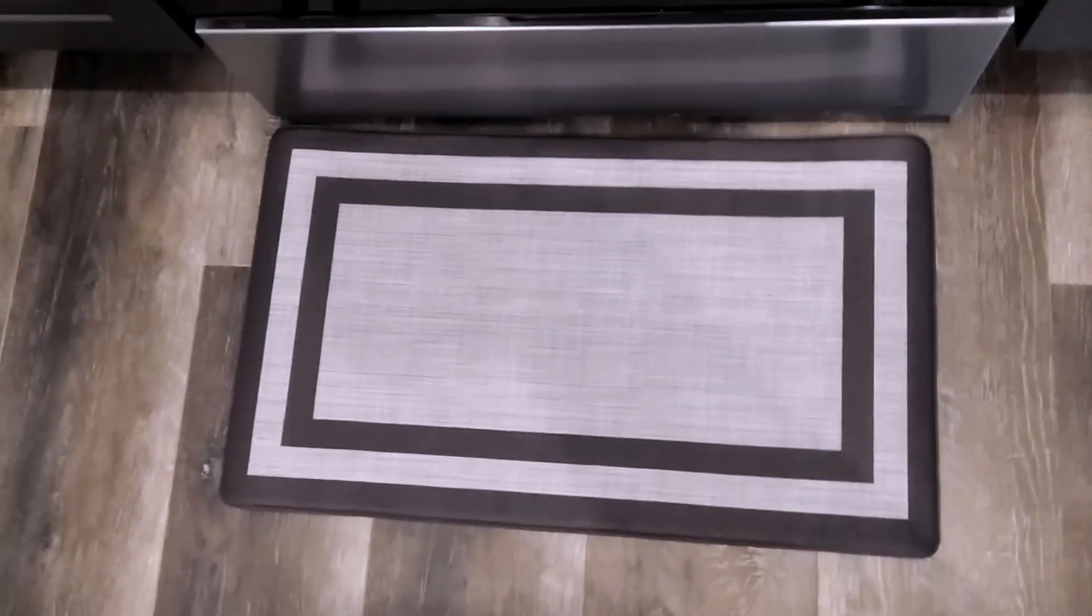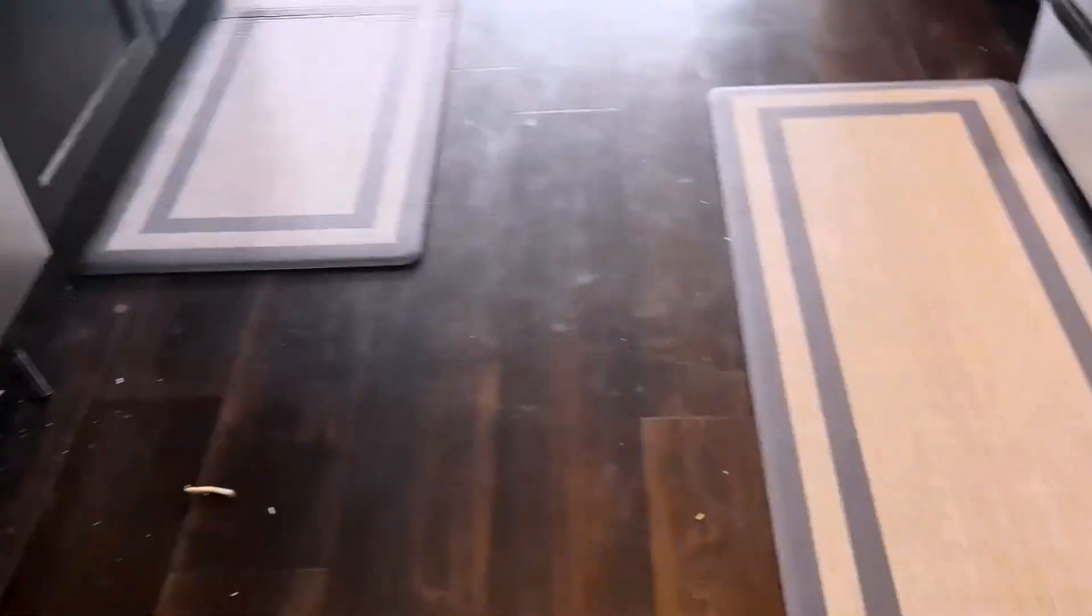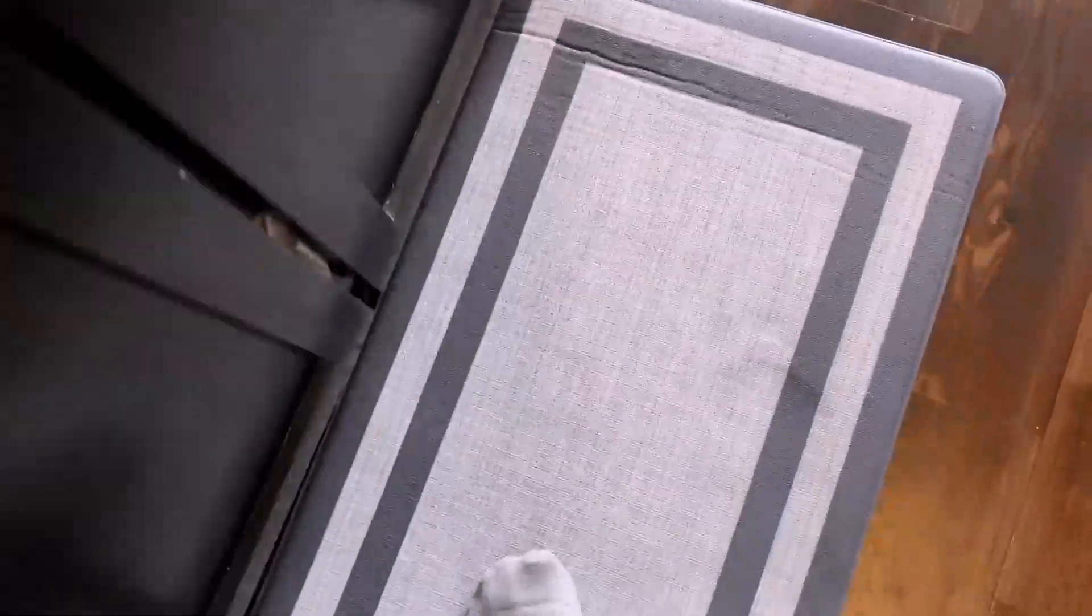Additionally, the waterproof construction makes them easy to clean and maintain. The fade-resistant property of the Mattitude kitchen mat ensures that they maintain their color and aesthetic appeal even after prolonged use.